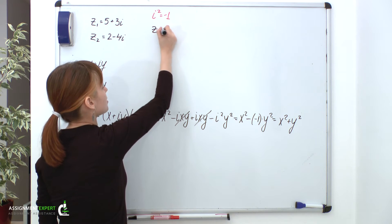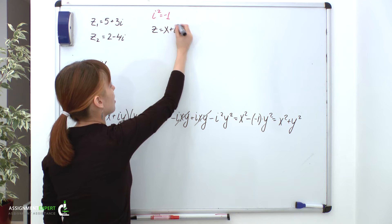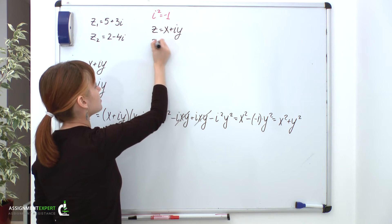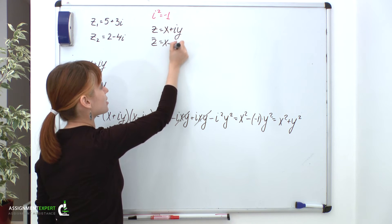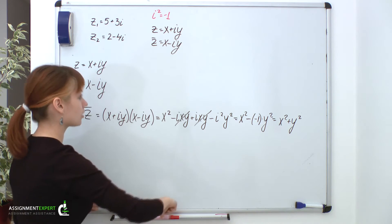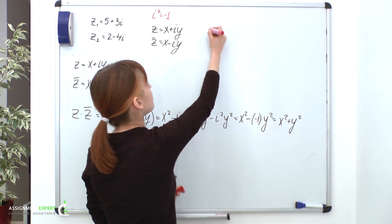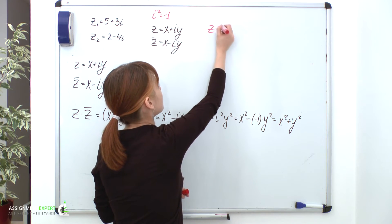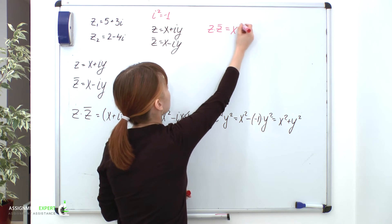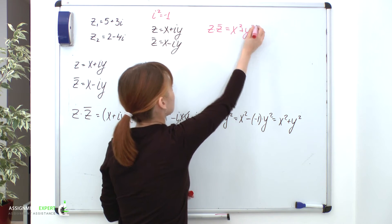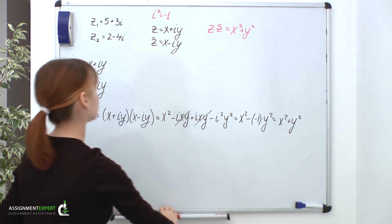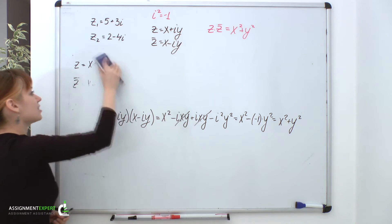So, we have z equal to x plus i y. z dash equals x minus i y. And then their product: z times z dash equals x squared plus y squared. And now, we're getting to discuss some division.